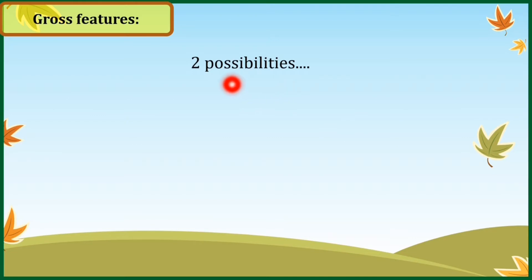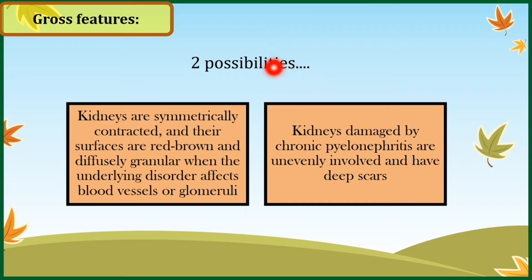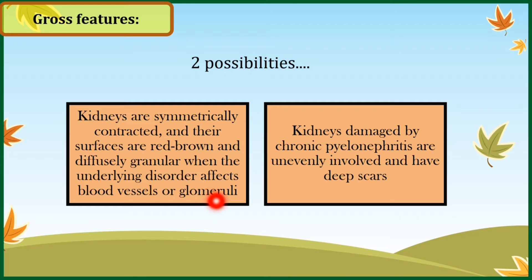For gross features of chronic kidney disease there are two possibilities. In the first, the kidneys are symmetrically contracted or atrophied, because diseases affecting blood vessels or glomeruli will uniformly affect both kidneys. The surfaces of kidneys affected by disorders of blood vessels or glomeruli are red-brown and diffusely granular, because glomerulosclerosis and arteriolosclerosis cause thickening of the vessel wall, which imparts a red-brown, diffusely granular appearance to the kidneys.